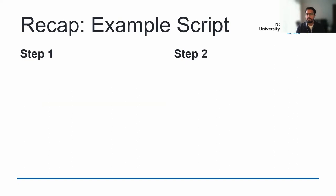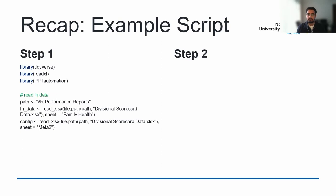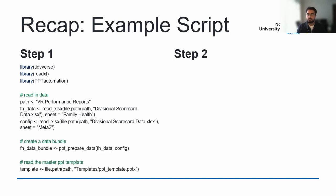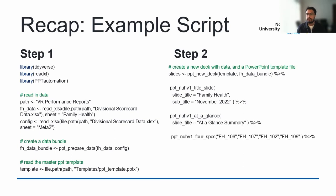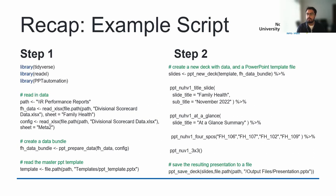To recap: PPT automation is a simple two-step package to reduce reporting timescales and improve efficiency for SPC production. You call in the packages — tidyverse, readxl, and PPT automation. You read in your data to create a data bundle. Step two: create your new slide deck, completely customisable by bringing in the functions you'd like — a title slide, at-a-glance slide, four SPCs for the metrics you want to report, and a three-by-three metrics matrix. Then you save your output as a PowerPoint.